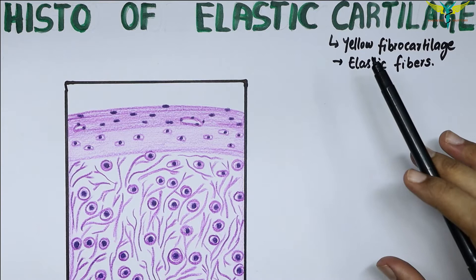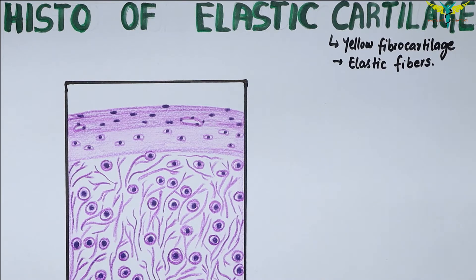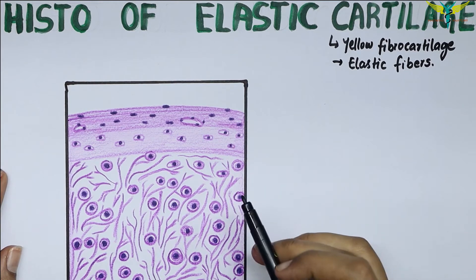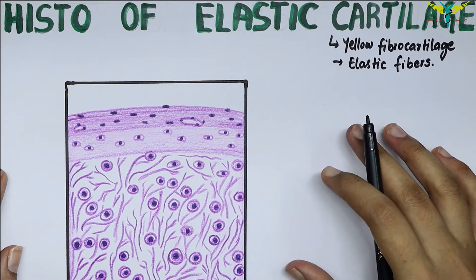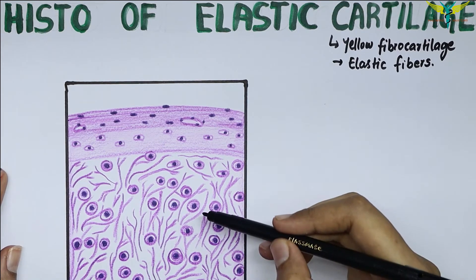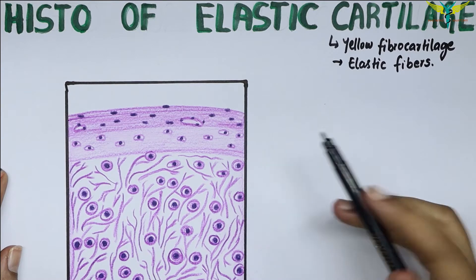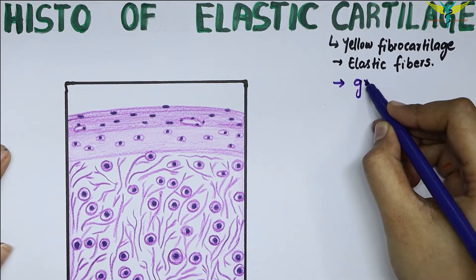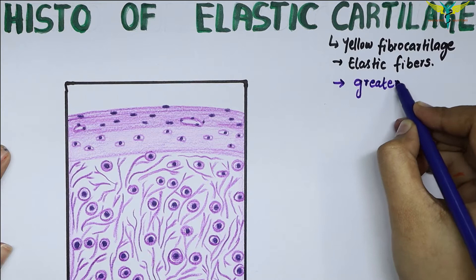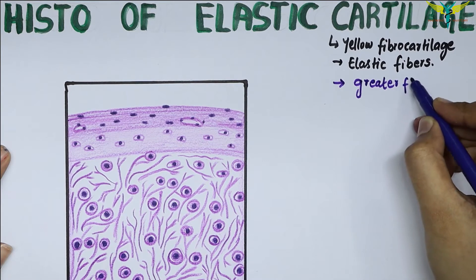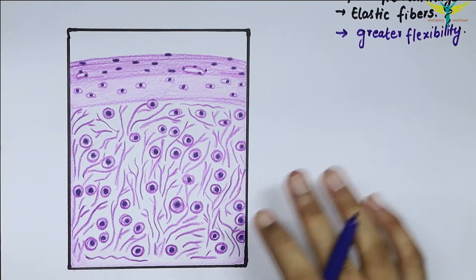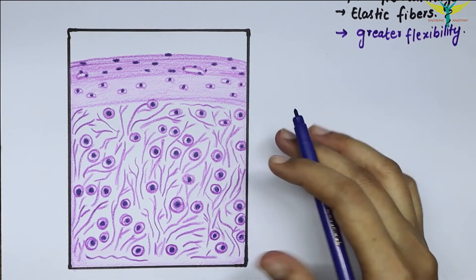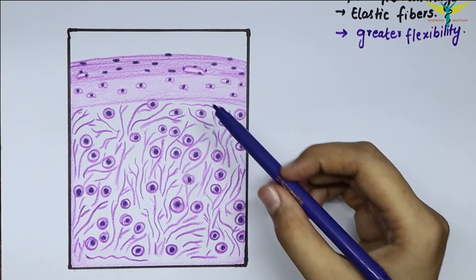These elastic fibers are difficult to see in hematoxylin and eosin stain and can be clearly visualized by special methods of staining. The elastic cartilage possesses greater flexibility than the hyaline cartilage, and it readily recovers its shape after being deformed by any injury.